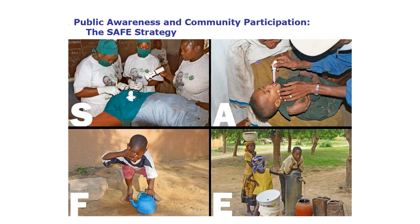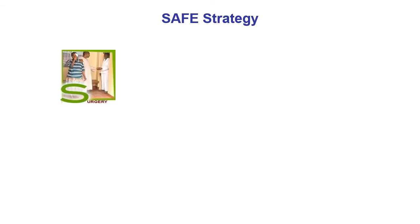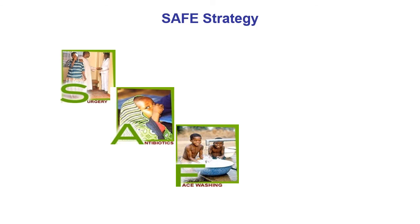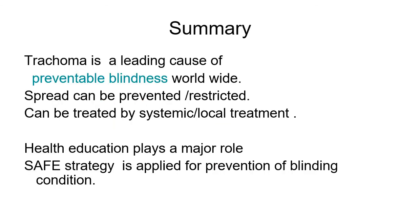Important viva questions include: What are Herbert's pits? What is Arlt's line? What is the SAFE strategy? What is pannus? In summary, trachoma is a leading cause of preventable blindness worldwide. Spread can be prevented or restricted, it can be treated by systemic or local treatment, and the SAFE strategy is applied for prevention of blinding trachoma in the community.